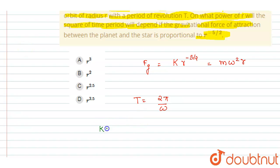So I will write here: k r to the power minus 5 by 2 equals m omega squared, which is 4π squared r squared by T squared.